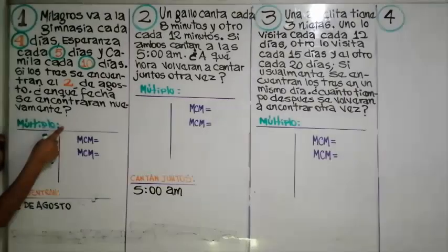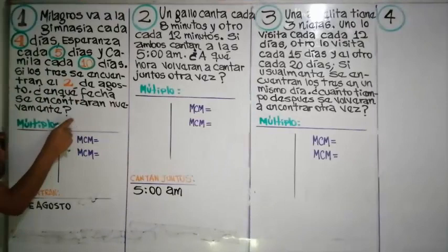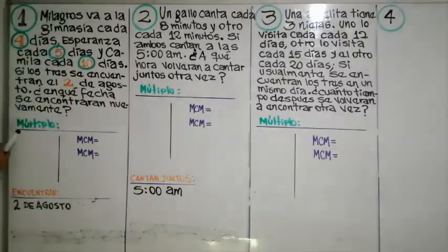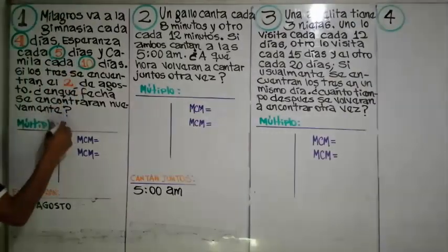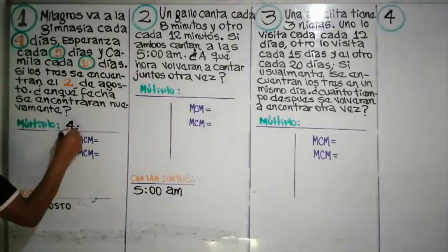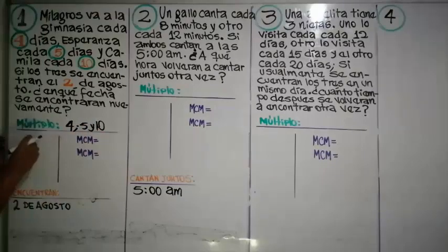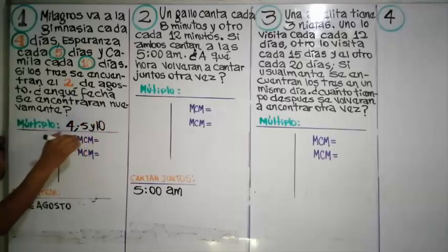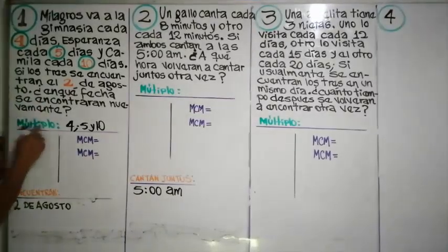Debe ser un número múltiplo de cuatro, de cinco y de diez. Vamos a hallar el múltiplo común de cuatro, de cinco y de diez. Ese múltiplo común va a ser el número de días en que se van a encontrar, es decir, vamos a sacar el mínimo común múltiplo de cuatro, cinco y diez.